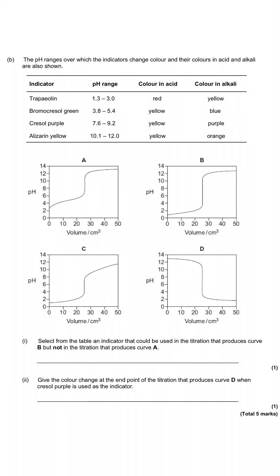This question then goes on to take a look at four different indicators and the pH range over which they change their colour, or to say it differently, the end point that these indicators can coincide with. And so when you are selecting an indicator for a particular titration, you need to make sure that the pH range coincides with the rapid pH change that occurs at the equivalence point of a titration. And so for instance, they're asking us to select from the table an indicator that can be used in the titration that produces curve B, but not curve A.